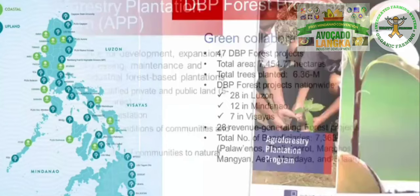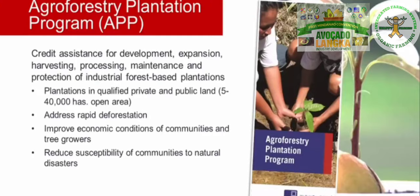DBP forest projects extend assistance to a total of 7,363 beneficiaries from Palawan, Ibaloi, Igorot, Manobo, Mangyan, Ayta, Mandaya, and Blaan communities. As they say, it takes two to tango, and such is the case in partnership. DBP and its forest partners must perform certain responsibilities to ensure our collective goals are achieved, including regular maintenance and protection of DBP forest projects.